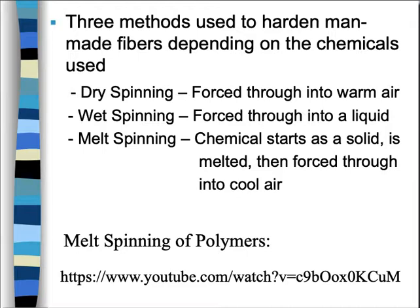There are three methods used to harden manufactured fibers: dry spinning, wet spinning, and melt spinning. These are the three different methods used depending on which chemicals are involved. Going directly from fiber to yarn is important for manufactured fibers, because if you were to extrude manufactured fibers and try to organize them before making them into yarn, it would get very tangled and messy. So we go straight to forcing the material through warm air, through liquid, or melting a chemical and forcing it through cool air to create these fibers and then directly make them into yarns.